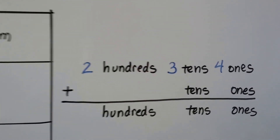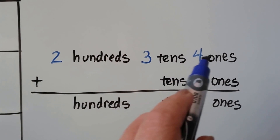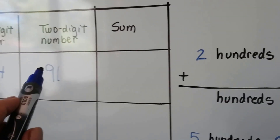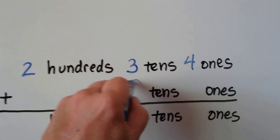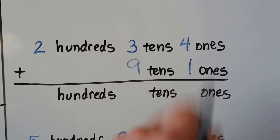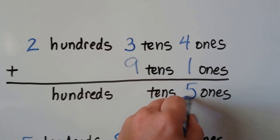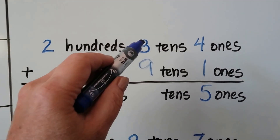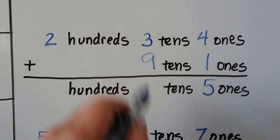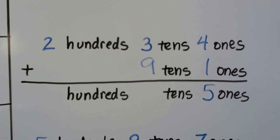So what we're going to do is write it like this. We have two hundreds, three tens, and four ones for our 234. We need to add nine tens and one one. We start by adding the ones place first. Four plus one is five, so we have five ones. We have three plus nine — we start with the nine and count up three: nine, ten, eleven, twelve.